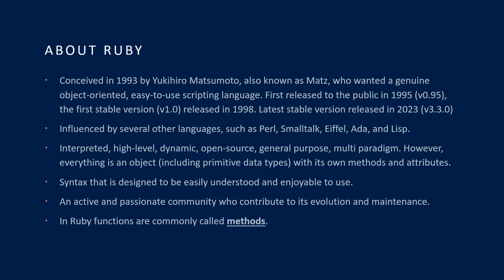Ruby was conceived in 1993 by Yukihiro Matsumoto — also known as Matz — who wanted a genuine object-oriented, easy-to-use scripting language. First release to the public was in 1995, version 0.95. The first stable version 1.0 was released in 1998, and the latest stable version as of this video — released in 2023 — is version 3.3.0, released in November 2023. It was influenced by several other languages such as Perl, Smalltalk, Ada, and Lisp, and has gone on to influence other languages in turn.